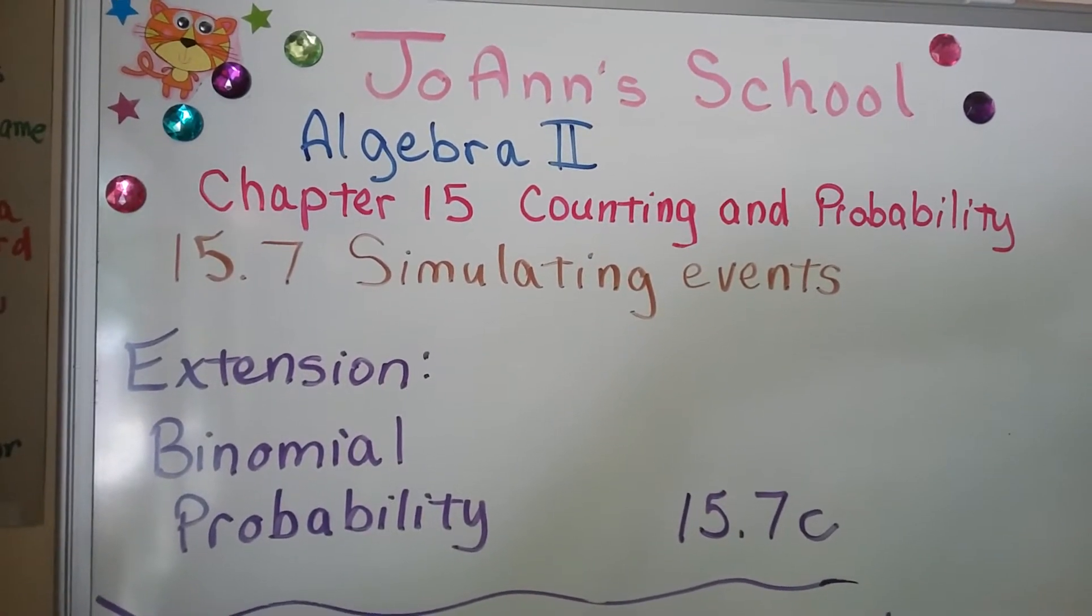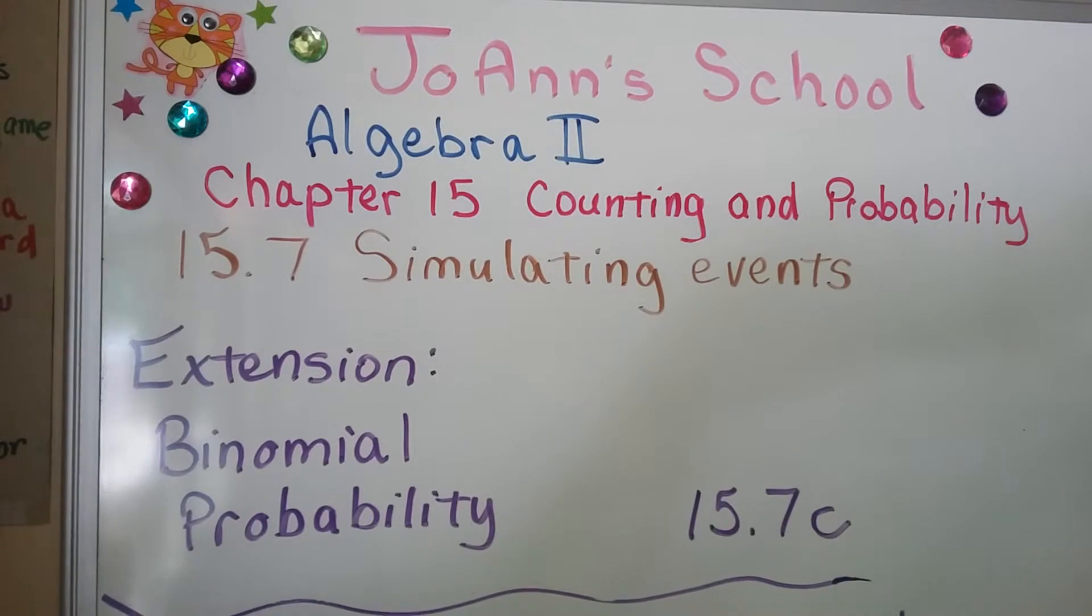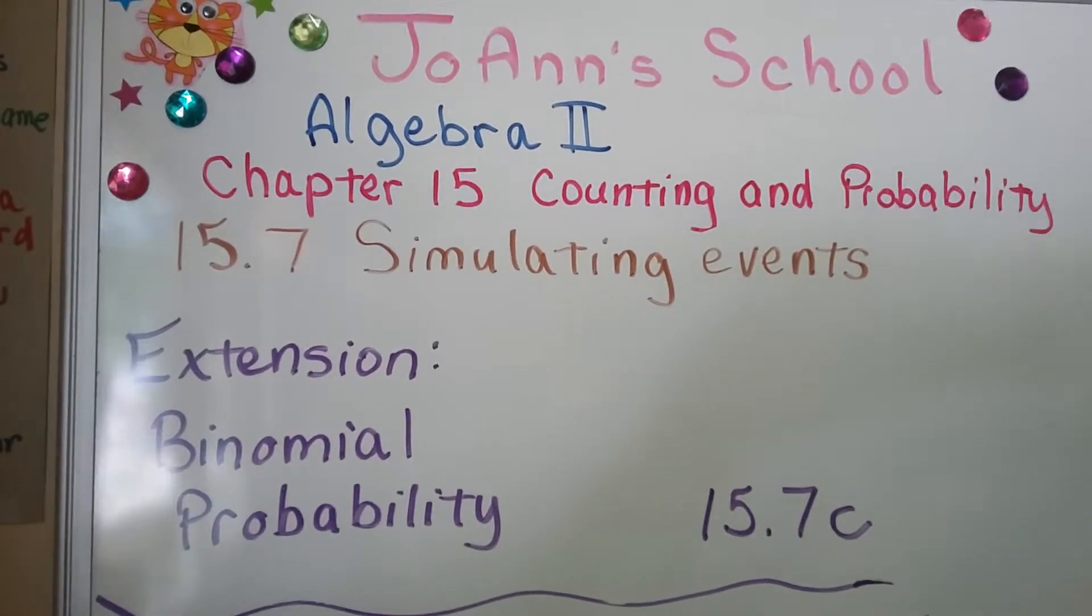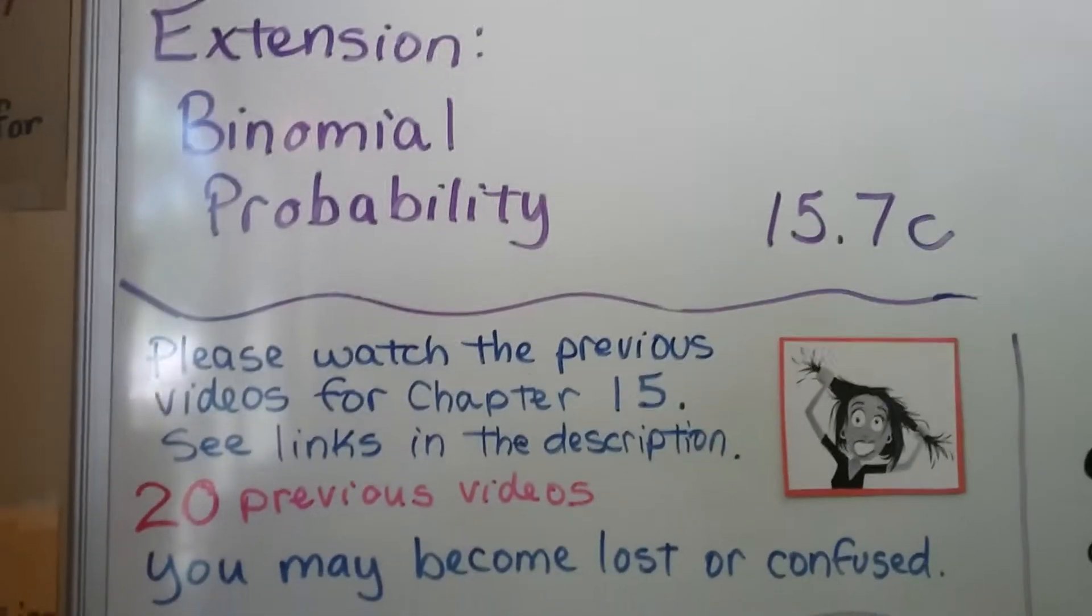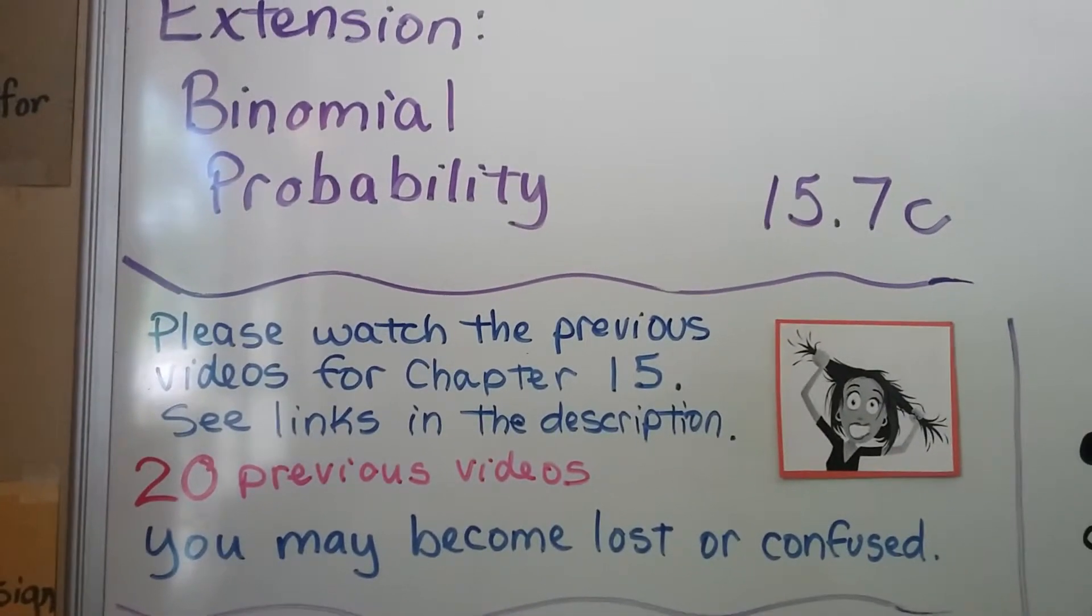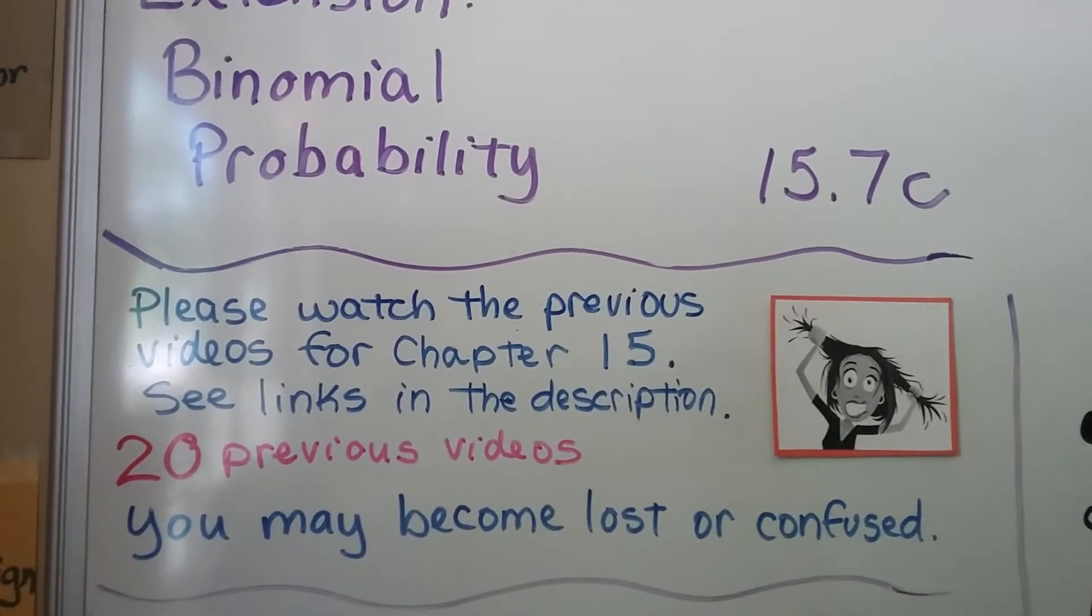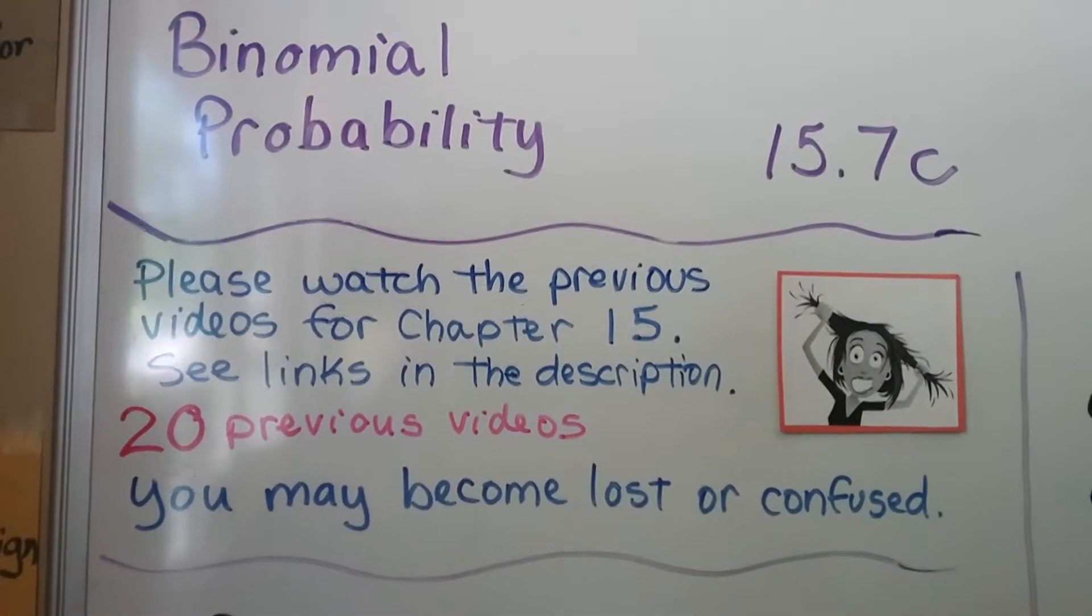This is the final video for our lesson on simulating events. This is extension binomial probability, 15.7c. We're up to 20 previous videos for this chapter 15 and there's a link in the description in case you become lost or confused so that you can watch the videos you missed.